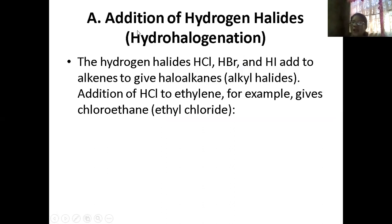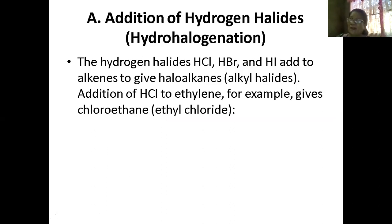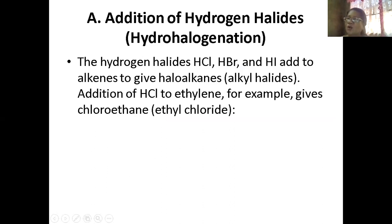The first reaction is the addition of hydrogen halides. The halides refer to group 7 in the periodic table: chlorine, bromine, iodine, fluorine — though fluorine is typically excluded. Chlorine, bromine, and iodine are the hydrogen halides, also called the alkyl halides.